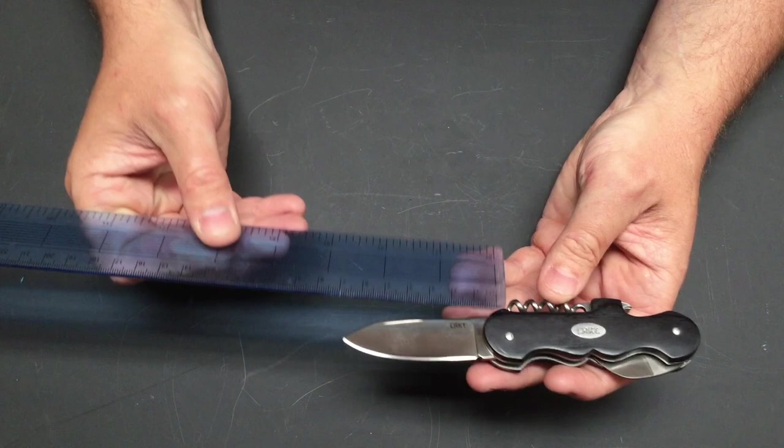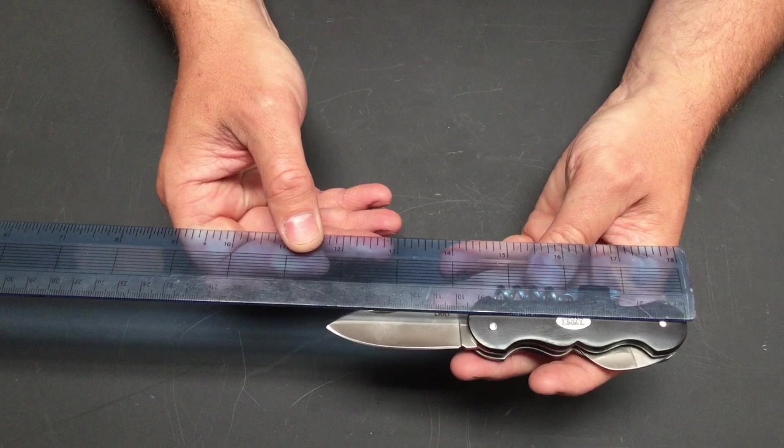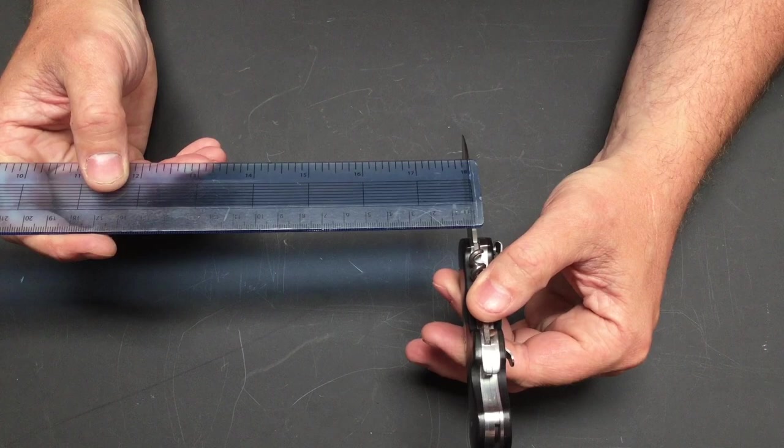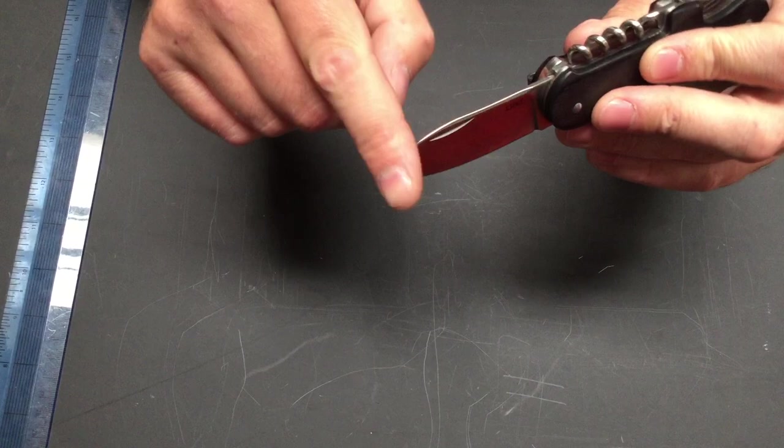That's six and a half centimeters. Overall we are looking at just shy of 16, two millimeters thick on the back. You'll see the way that blade, that drop point blade, is ground. You've got a very, very shallow false edge on the top.